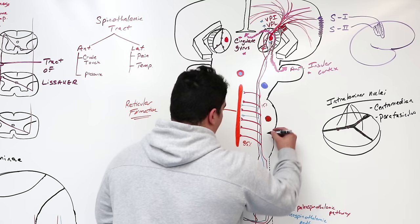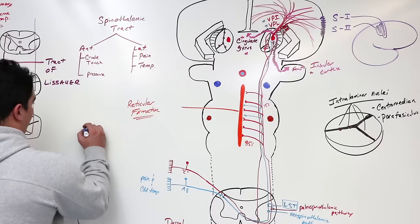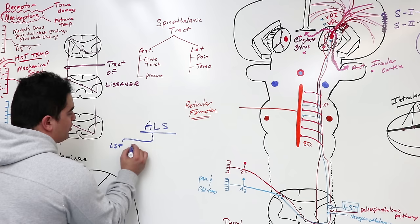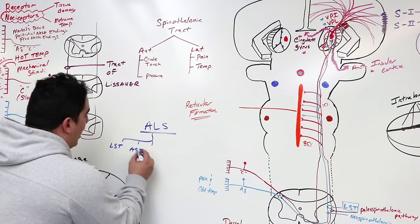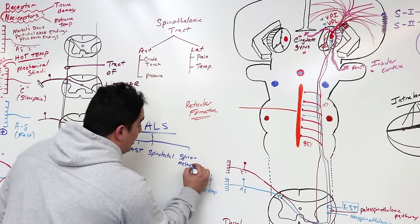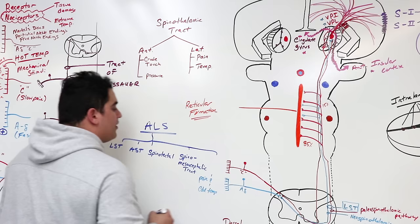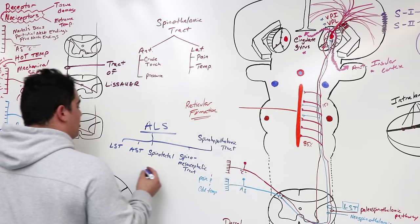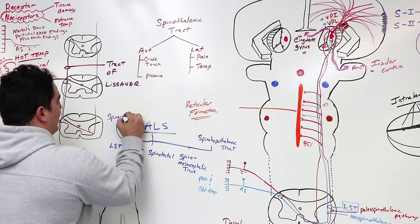In the anterolateral system, in addition to the lateral and anterior spinothalamic tracts, we're also carrying the spinotectal tract, the spinomesencephalic tract — which is really important — the spinal hypothalamic tract, and the spinal reticular tract. These are all fibers that are part of this whole system, and we need to cover the spinotectal and spinomesencephalic tracts.